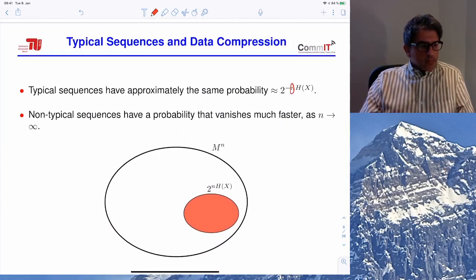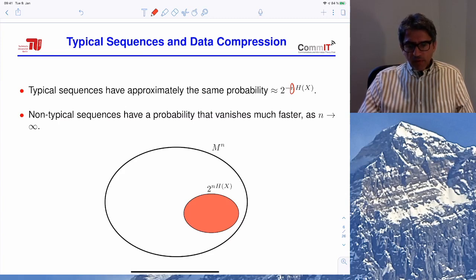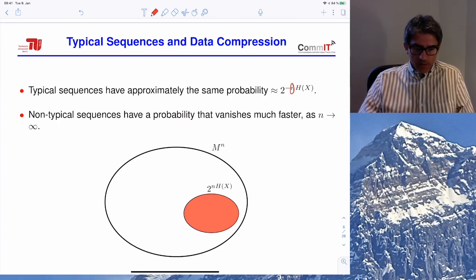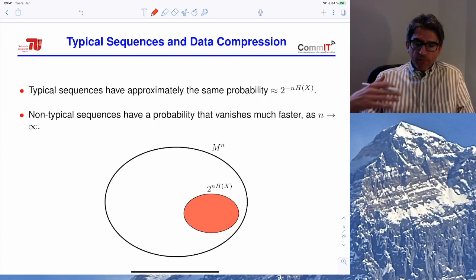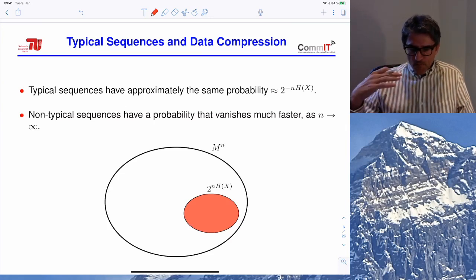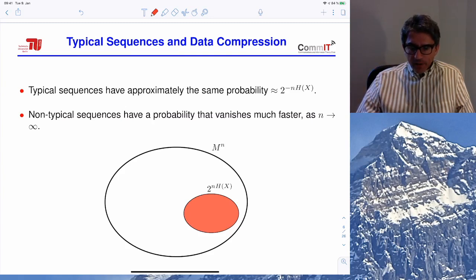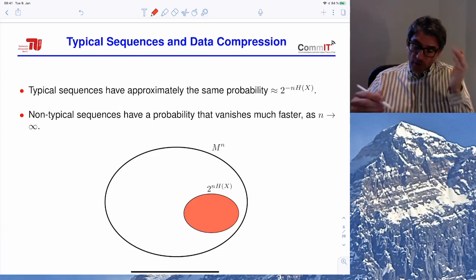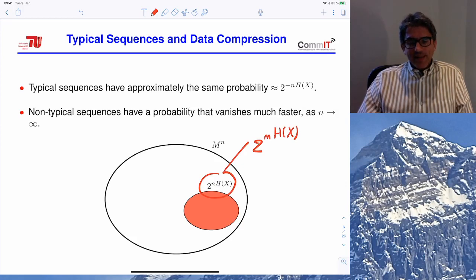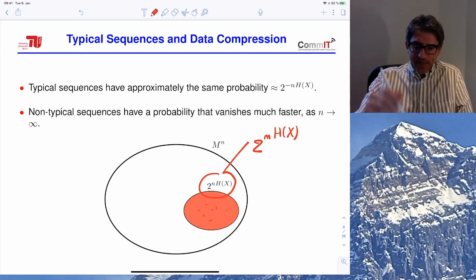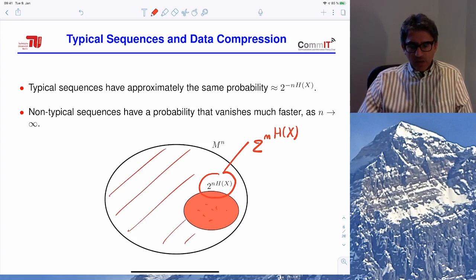What is the operational meaning of entropy? If we consider very long sequences of length n generated by the source and look at which sequences are actually likely to appear, it turns out that the whole probability mass concentrates over a relatively small set. This small set has size exponential to n times the entropy — 2^(nH(X)) — and is called the typical set. When n becomes large, the source is likely to produce sequences in this set and very unlikely to produce sequences outside it.